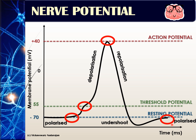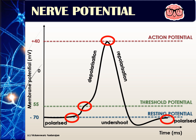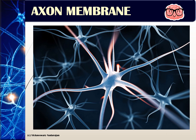These are the terms used in describing nerve potentials. To understand how a nerve can suddenly become negative, then suddenly become positive, we need to understand the structure of the axon.